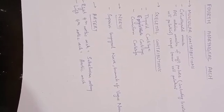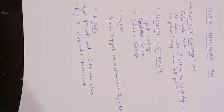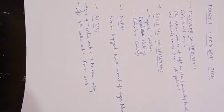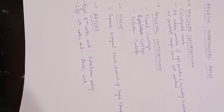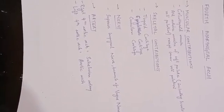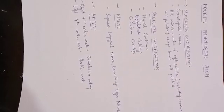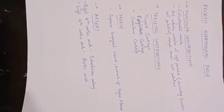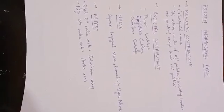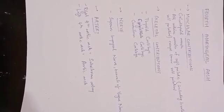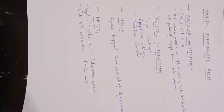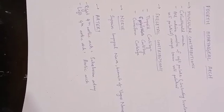Skeletal contributions are thyroid cartilage, corniculate cartilage, and cuneiform cartilage. The nerve present is the superior laryngeal nerve, which is a branch of the vagus nerve. The arteries are: from the right 4th aortic arch, the subclavian artery, and from the left 4th aortic arch, the aortic arch.